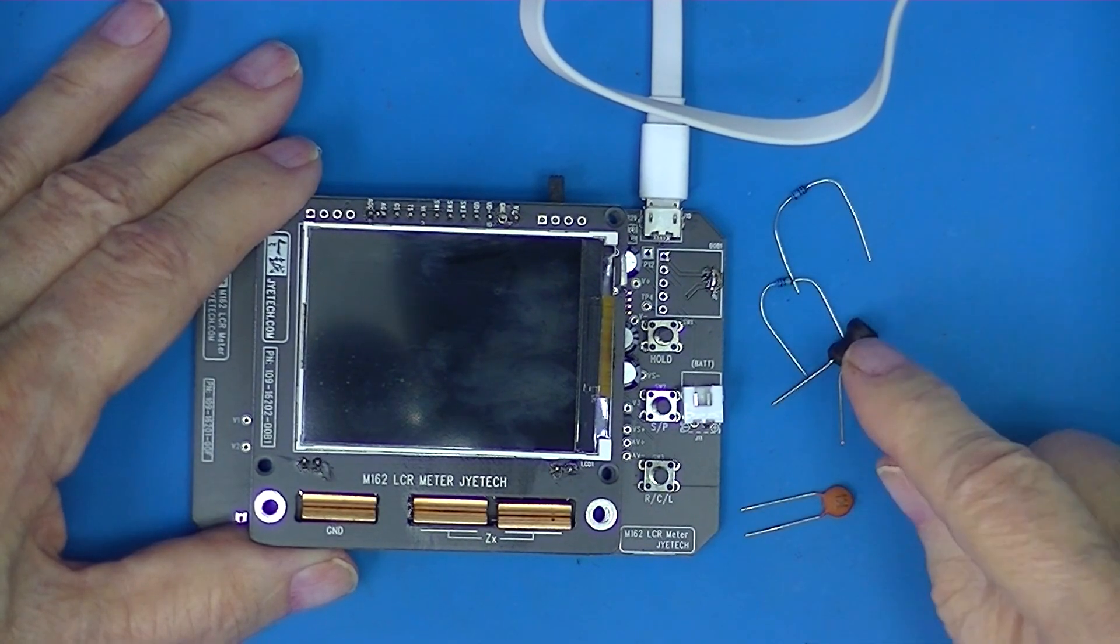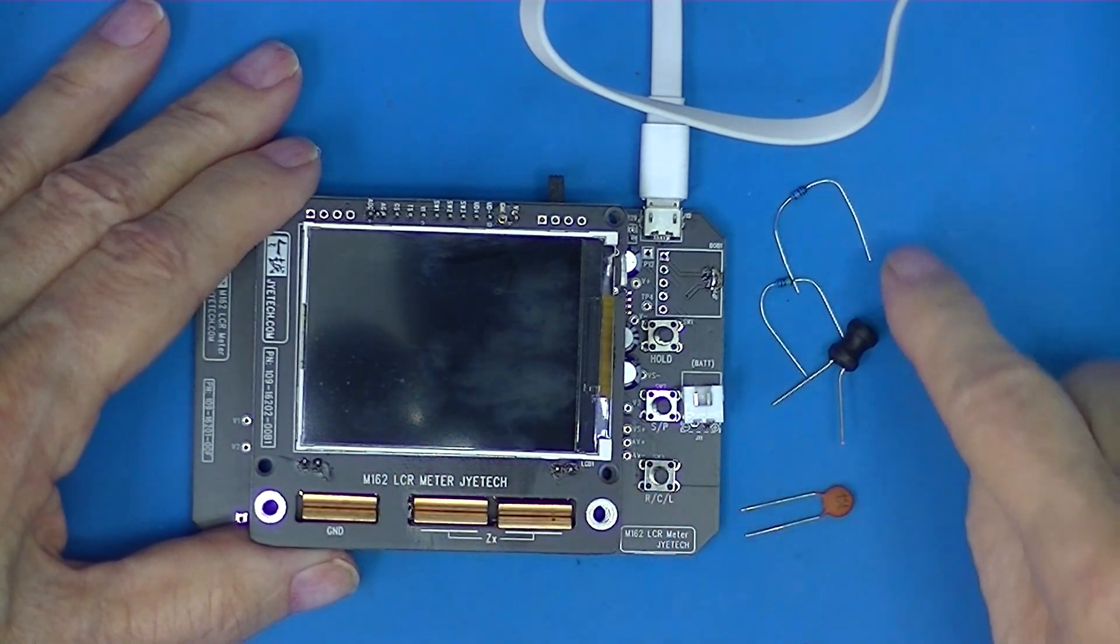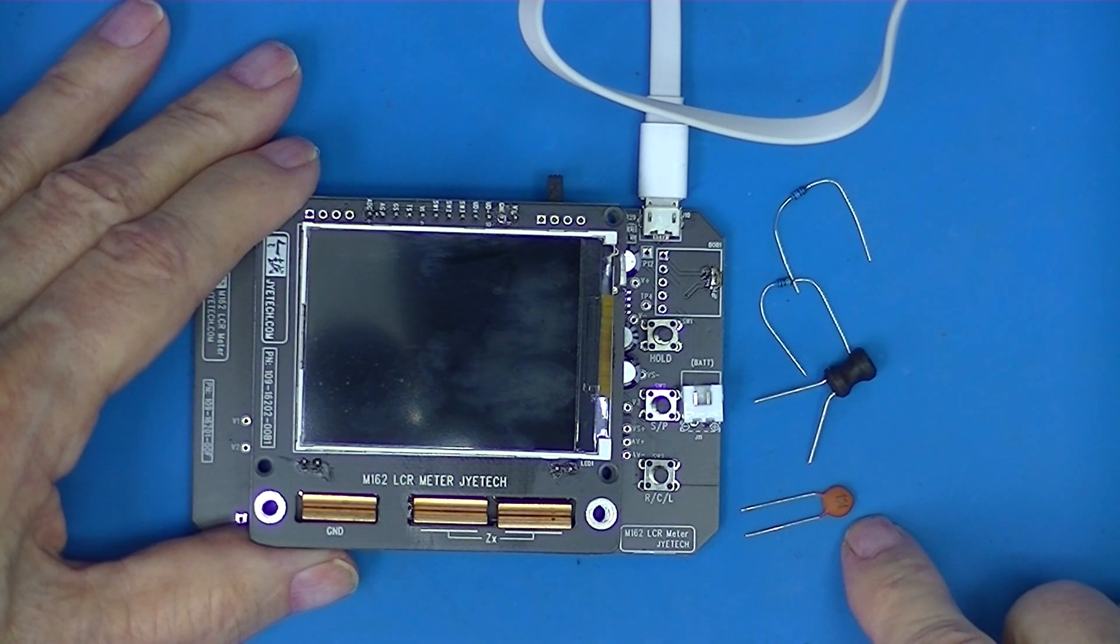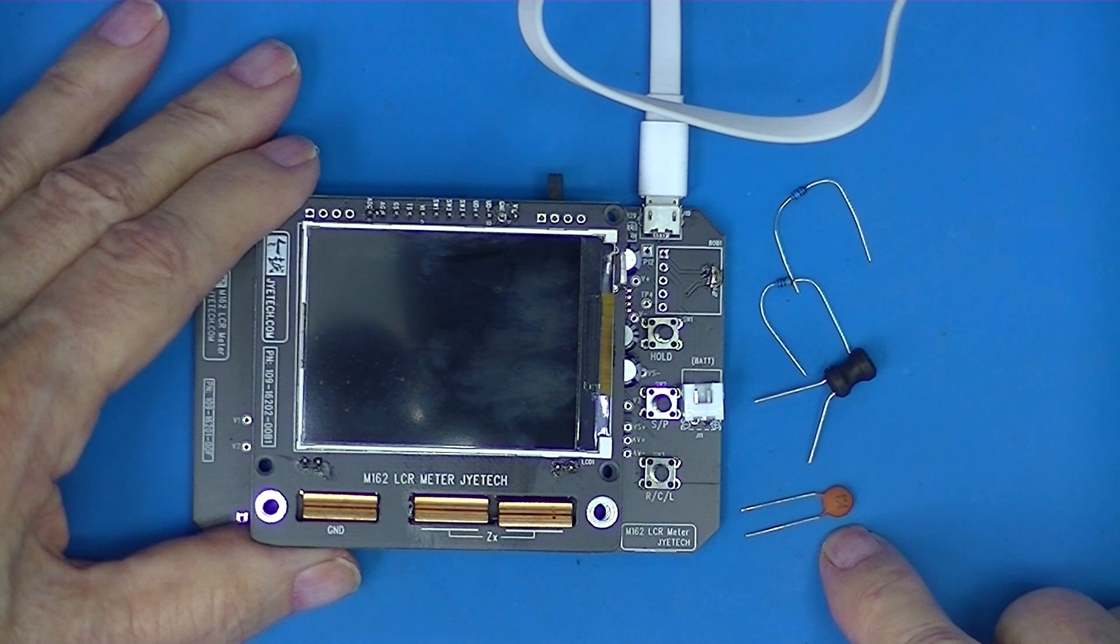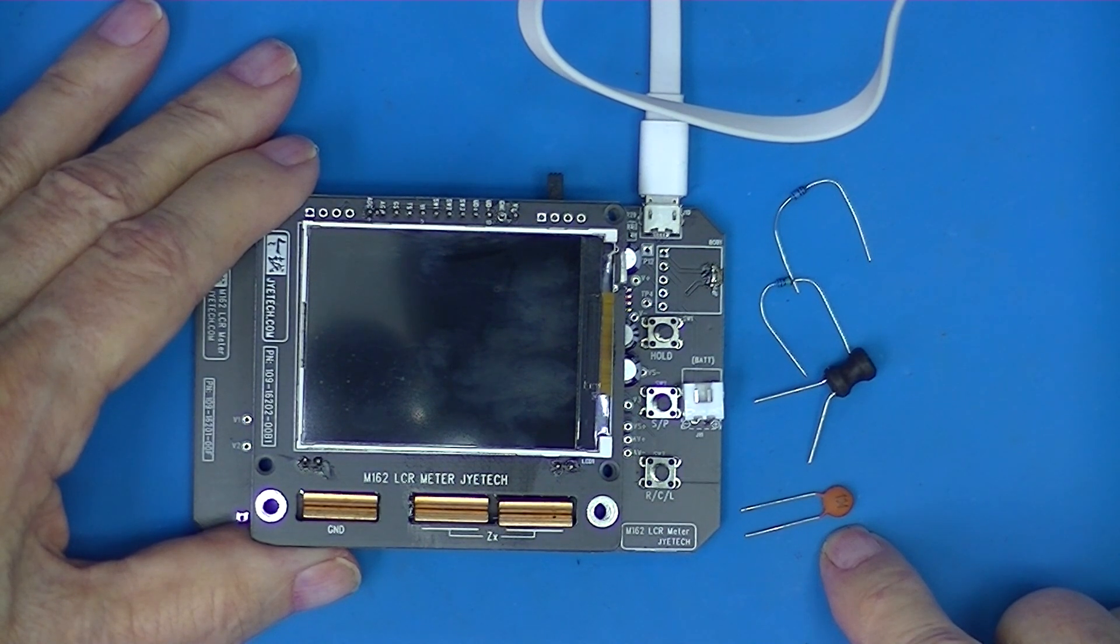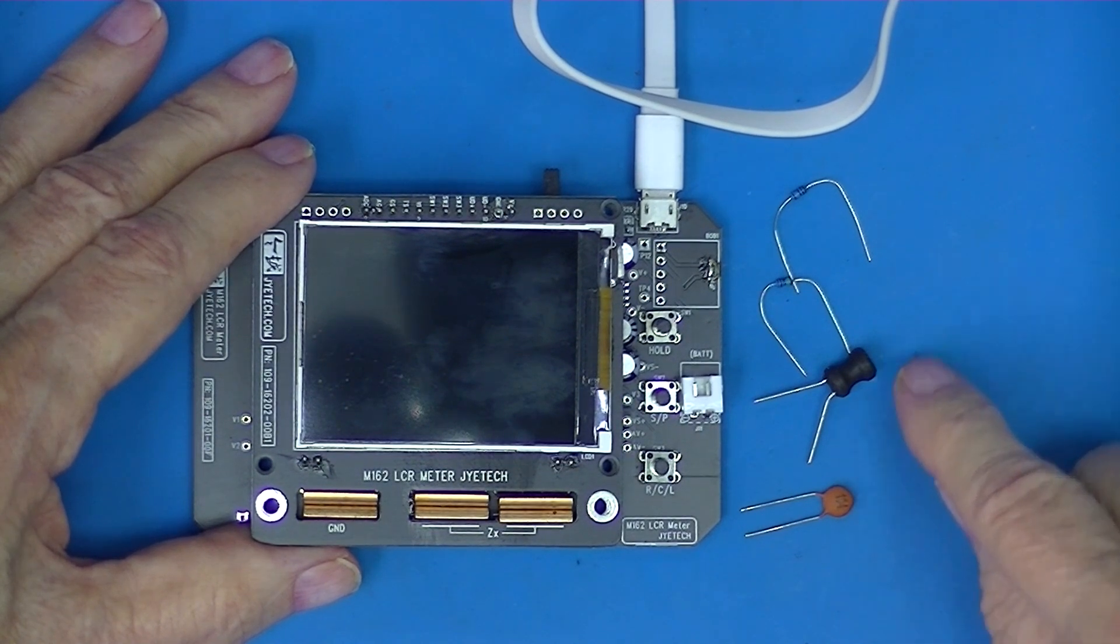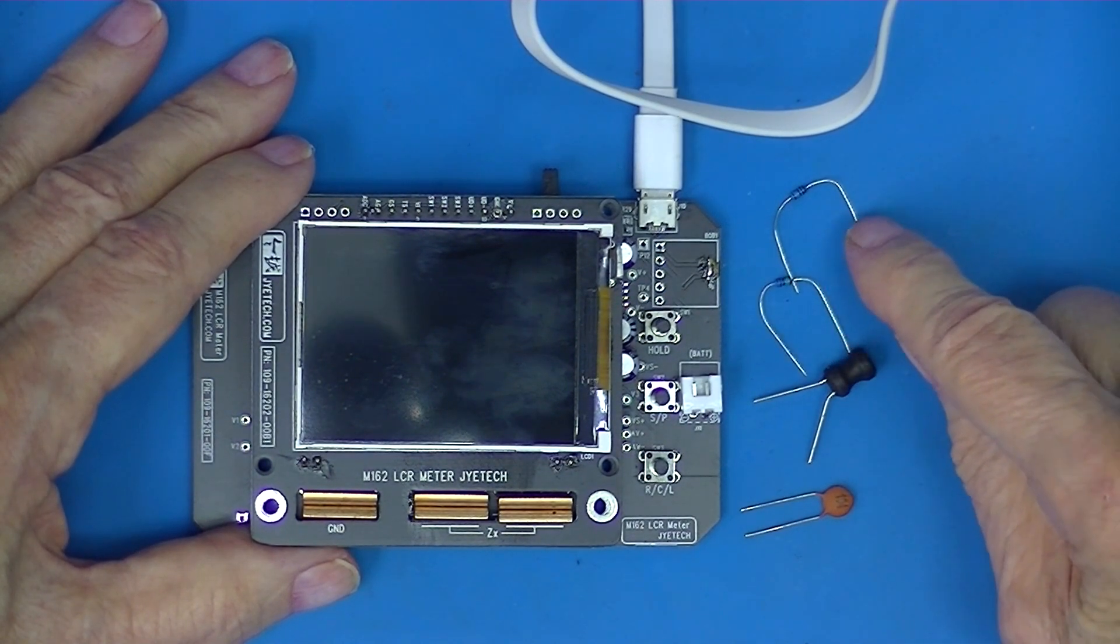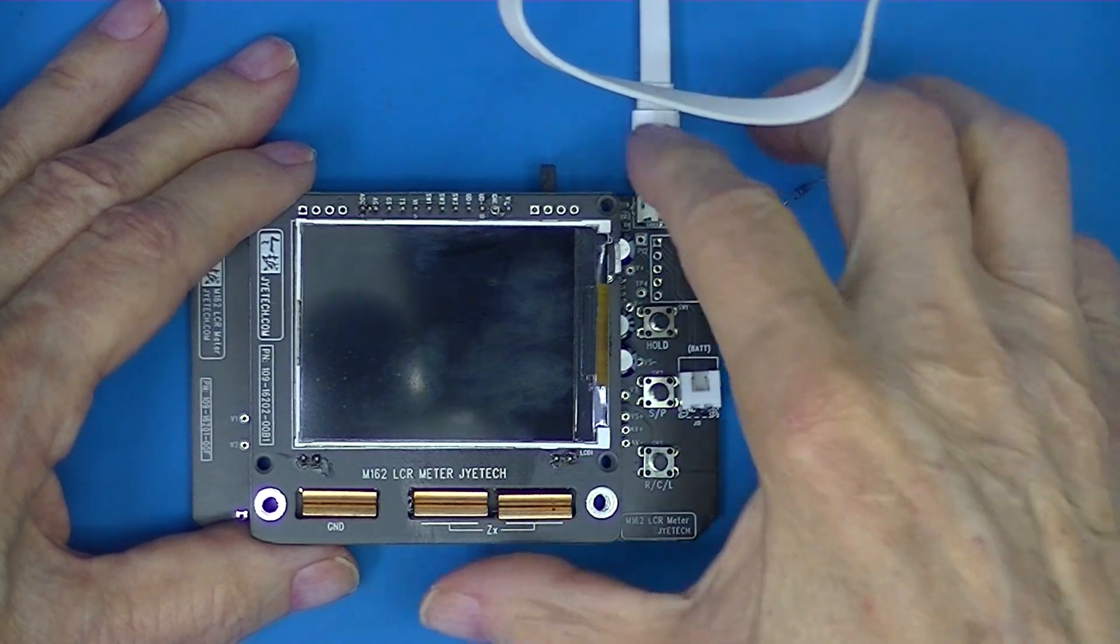In a separate plastic bag from the components we installed were these four components: a 0.1 microfarad capacitor, a 1 millihenry coil, and a 1 ohm and 1 mega ohm resistor. So let's turn it on and see what it looks like.